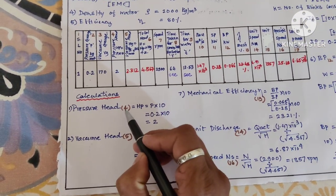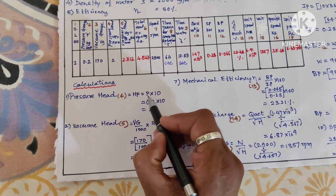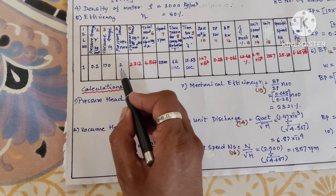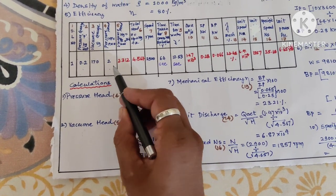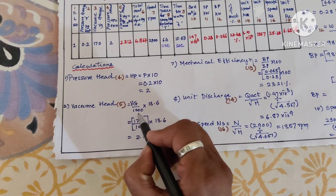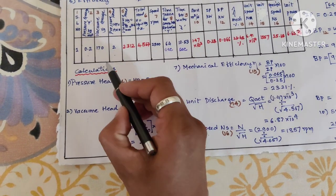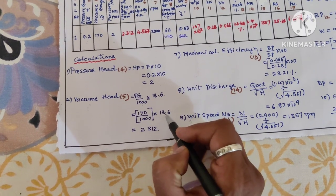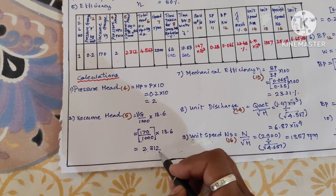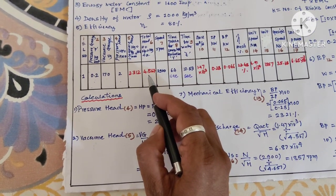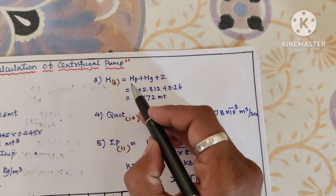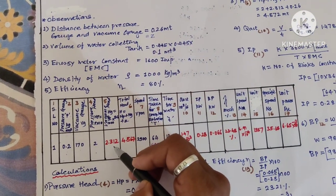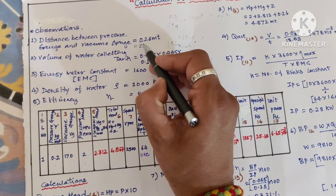Now moving to the calculations. The fourth column formula is pressure into 10, so 0.2 × 10 = 2. Next, vacuum gauge: VG/1000 × 13.6, so 170/1000 × 13.6 = 2.312. Total head: HP + HG + z, so 2 + 2.3 + 0.26 = 4.572 meter.